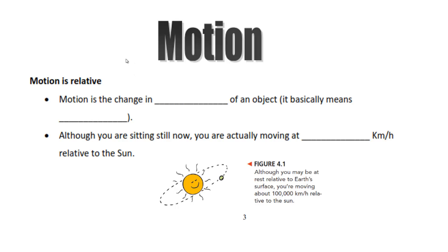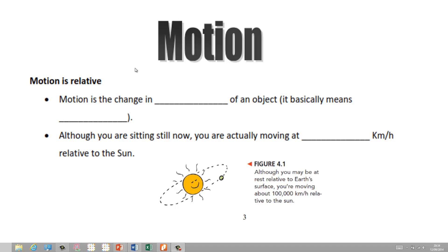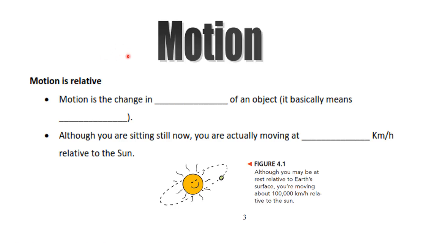In this video, I'm going to cover motion, distance and displacement, speed, velocity, and acceleration. So we'll start with motion. Motion is the change in location of an object — it basically means moving or movement.